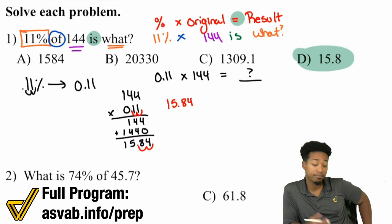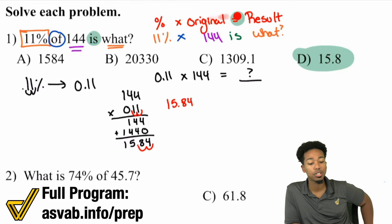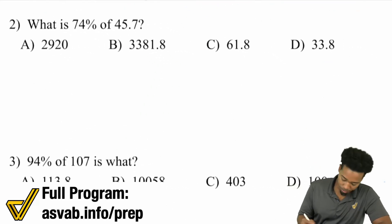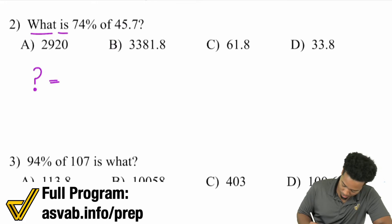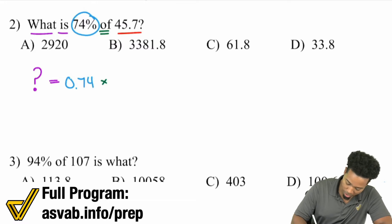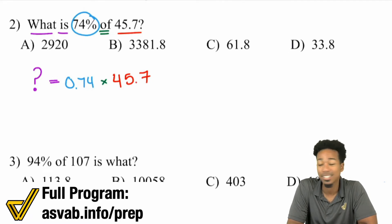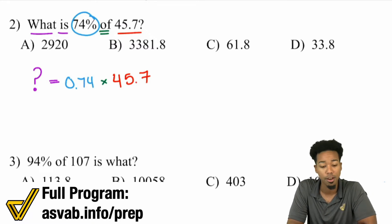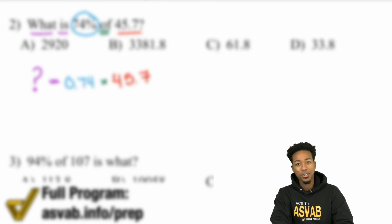To calculate the percent of a number, multiply the percent by the original number to get the result. Now let's look at another example: what is 74% of 45.7? Translating into math: 74% becomes 0.74 as a decimal, and 'of' means multiply. So 0.74 times 45.7 equals what. We've turned it into a decimal, so let's go ahead and calculate.